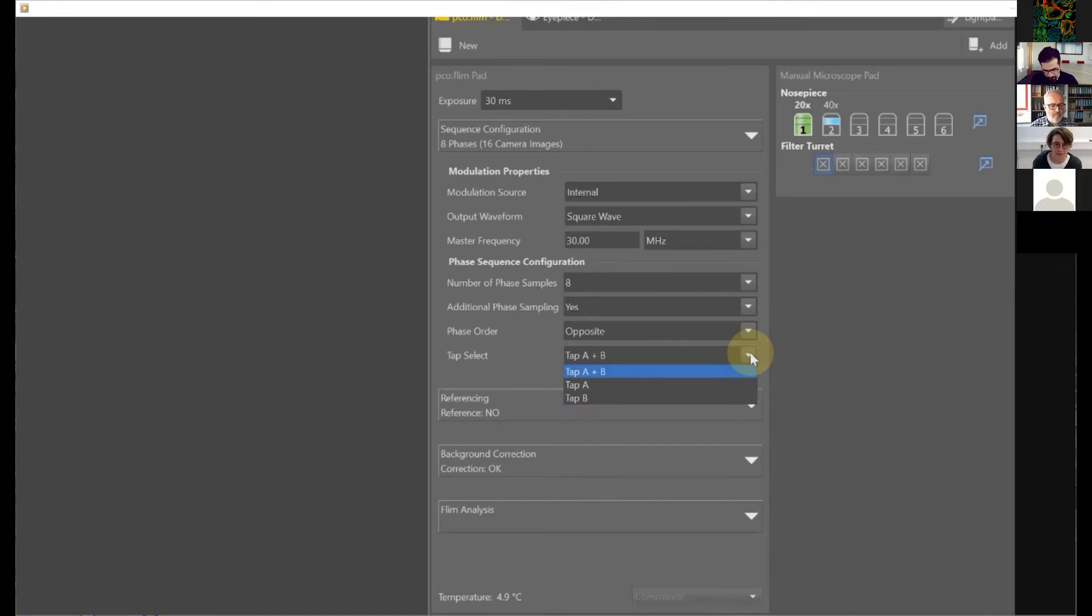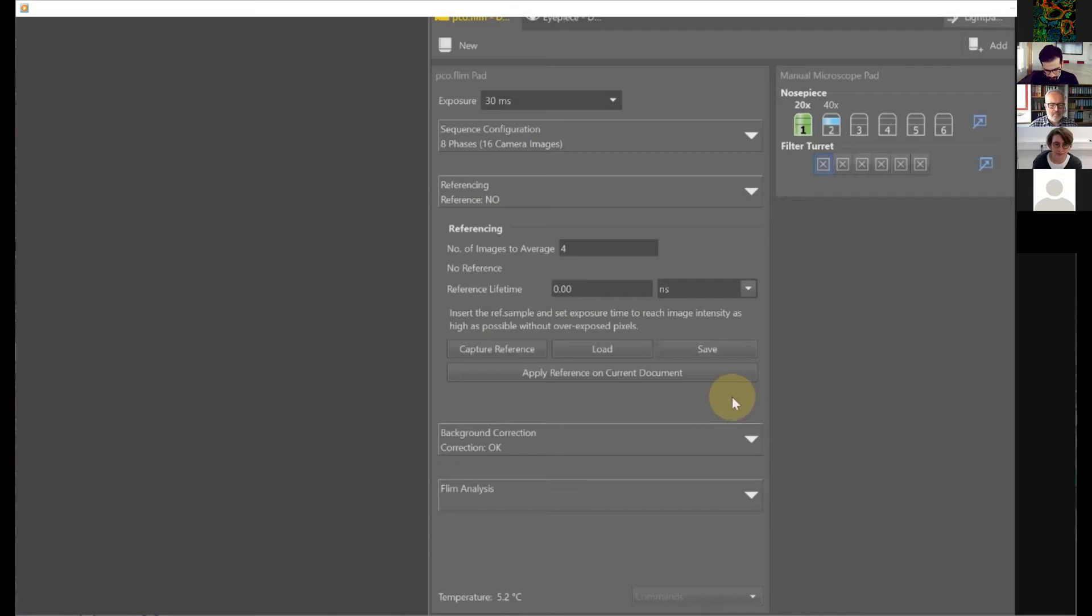The sequence configuration tab is followed by the referencing. The referencing describes the reference measurement, where you can adjust the number of images to average. You have to input a proper referencing lifetime, which I will show later on how to do that with a real reference measurement. Then you can capture the reference, you can save it, but as well you can load a reference file. If you've done this in the morning and you have the same settings again, then you can load the reference file and apply the reference to the current measurement.